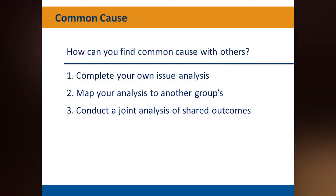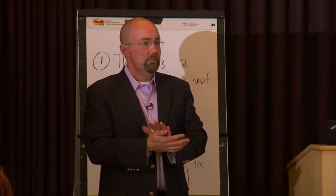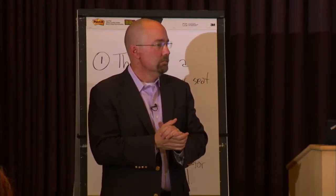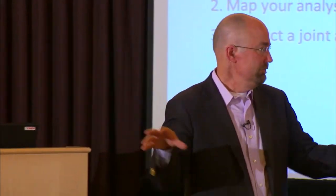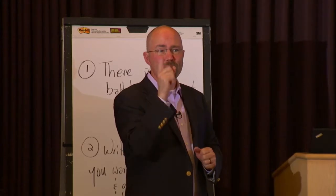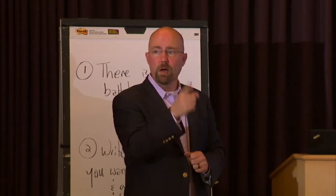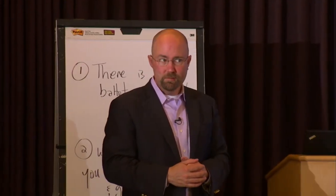A third approach is to actually do a joint analysis. Bring people who represent more than one coalition — and people involved in just a few — into a room on a Saturday, with good food and daycare if needed. Do some common cause analysis together. If we leave the room with two things that, if we all did them, would advance all of our outcomes — that's time very well spent.